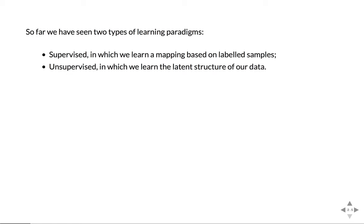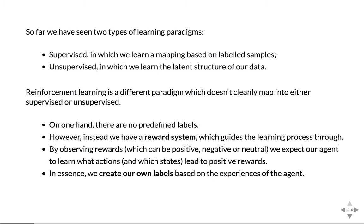We have seen supervised learning and unsupervised learning: in supervised learning we trained on labeled data, and in unsupervised learning we tried to infer the structure of the data, for example, some kind of latent manifold. The RL setting is a different paradigm — it doesn't clearly map onto either of these because we don't have predefined labels. We're just interacting with our environment, but we're not completely blind: we have a reward system. We do get feedback on the actions we perform, and we use these rewards to create labels from our interactions instead of having them as part of a dataset.